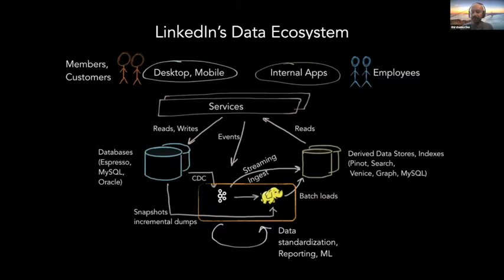Quick intro to LinkedIn's data ecosystem. It is as complex, and probably more complex, than it looks on this picture. We have services — lots and lots of them — so lots of APIs. We have lots and lots of types of data stores, and we have streams coming out of them and dumps going into a warehouse that has streams as well as batch data. There's a bunch of standardization, reporting, and then derived data going back into these stores and sometimes going out back into the services, sometimes going out externally into third-party APIs.